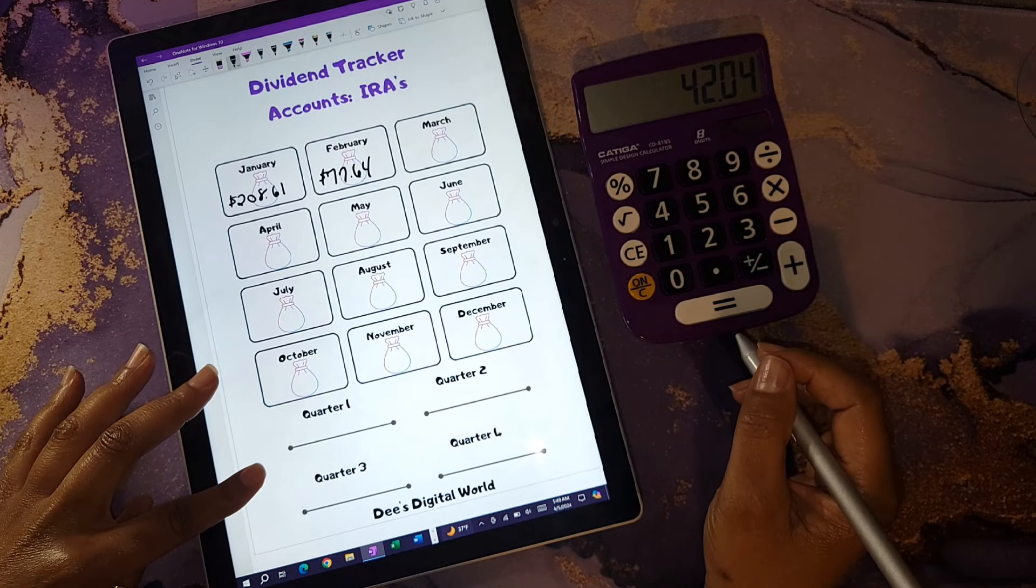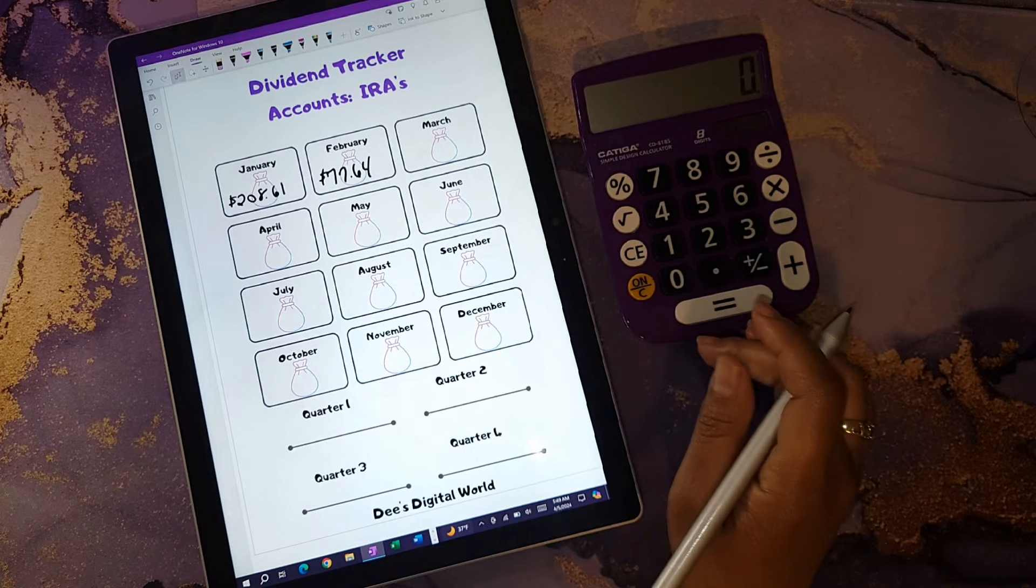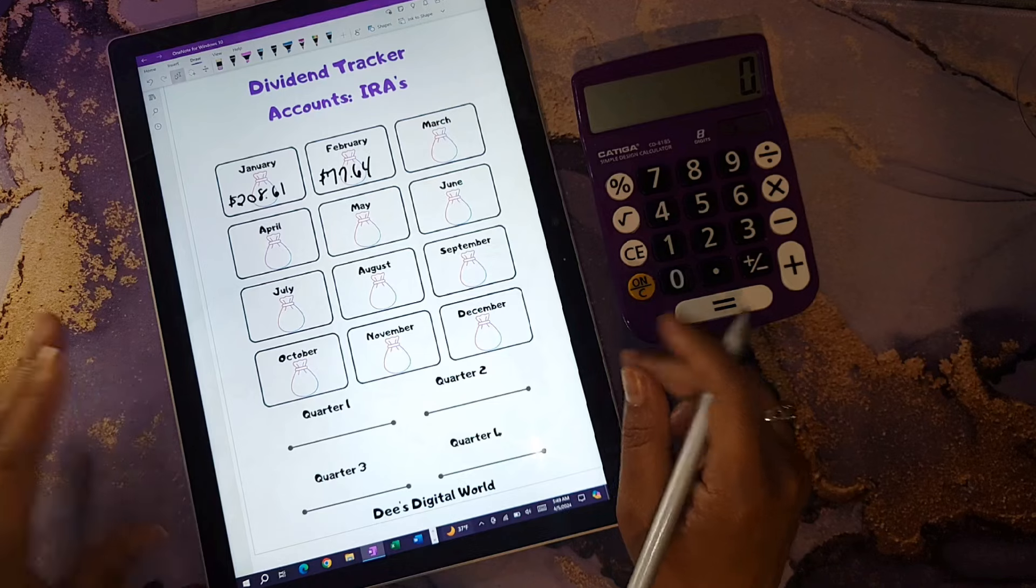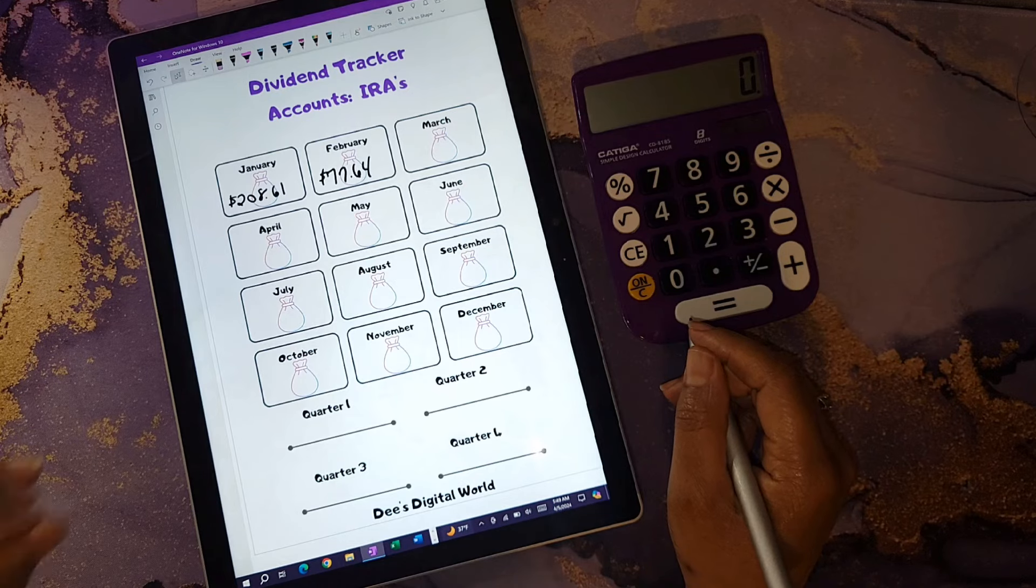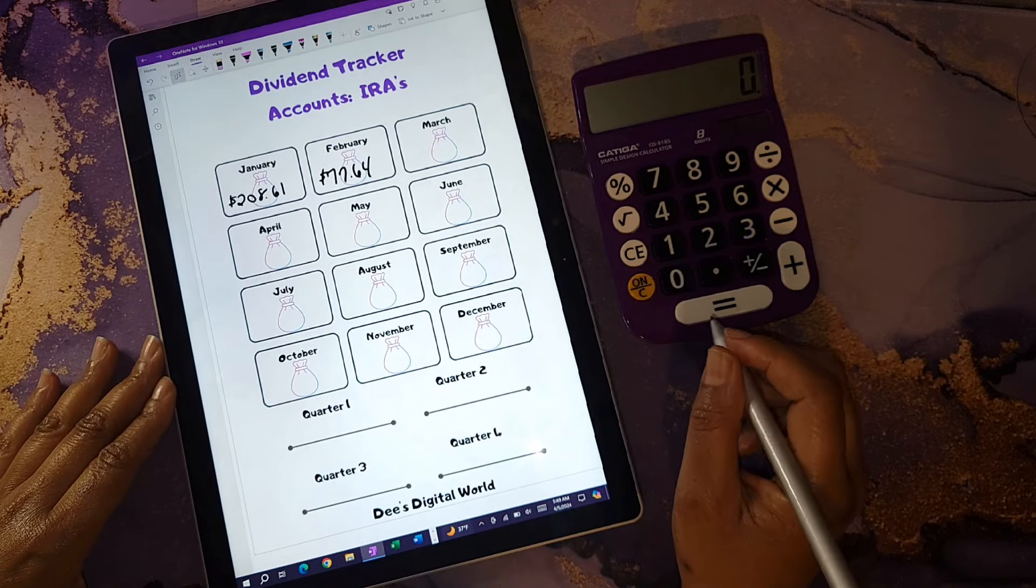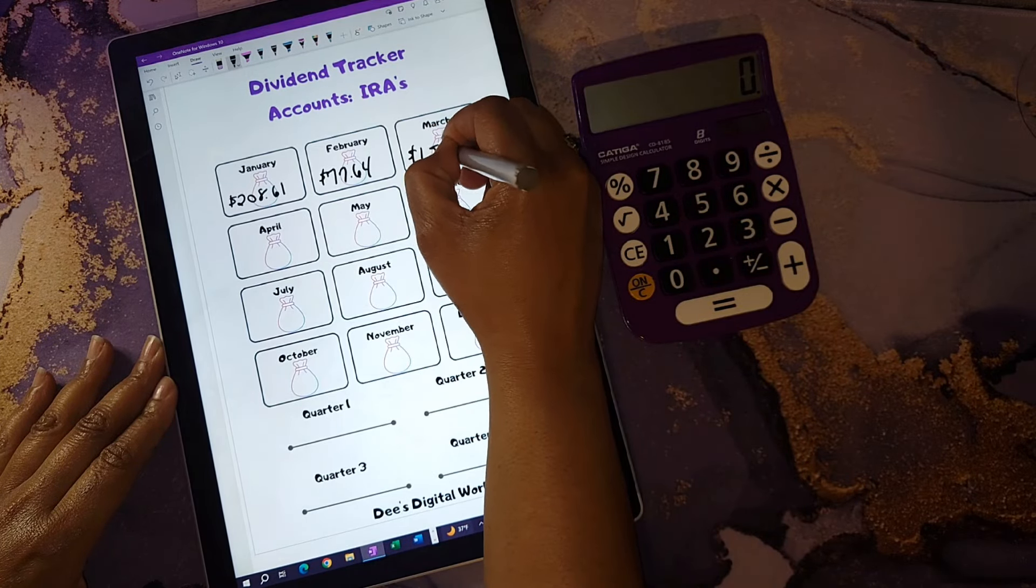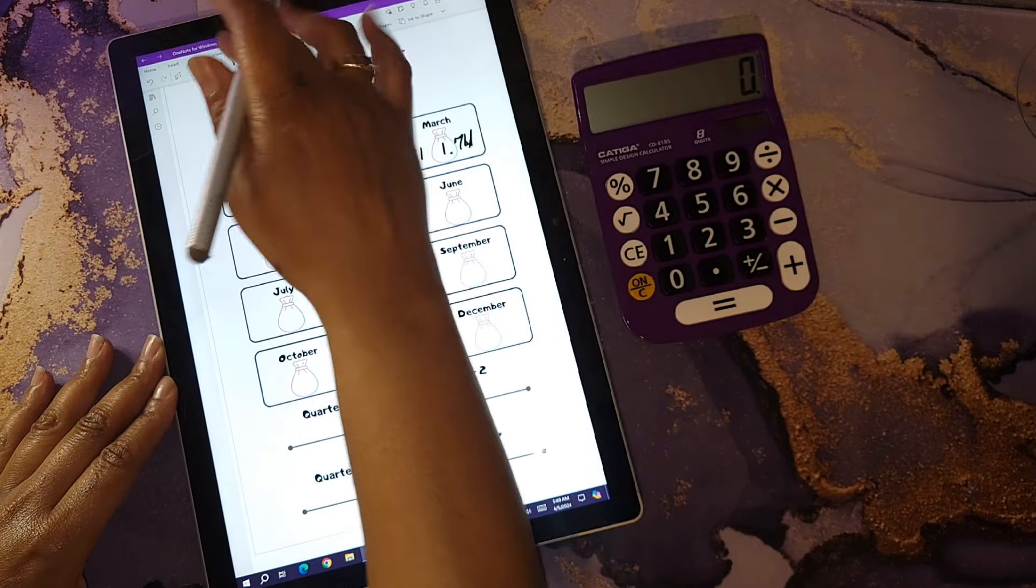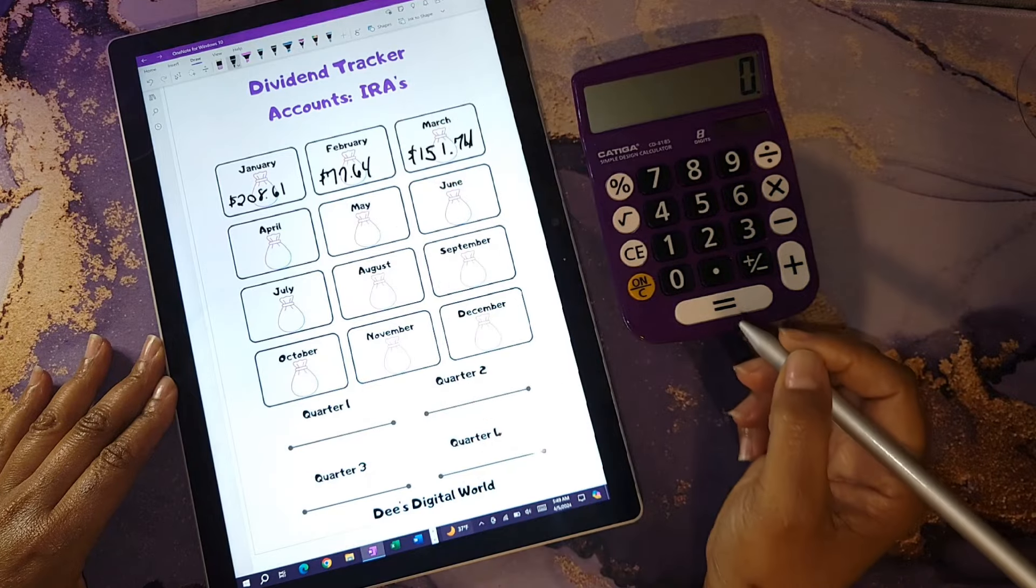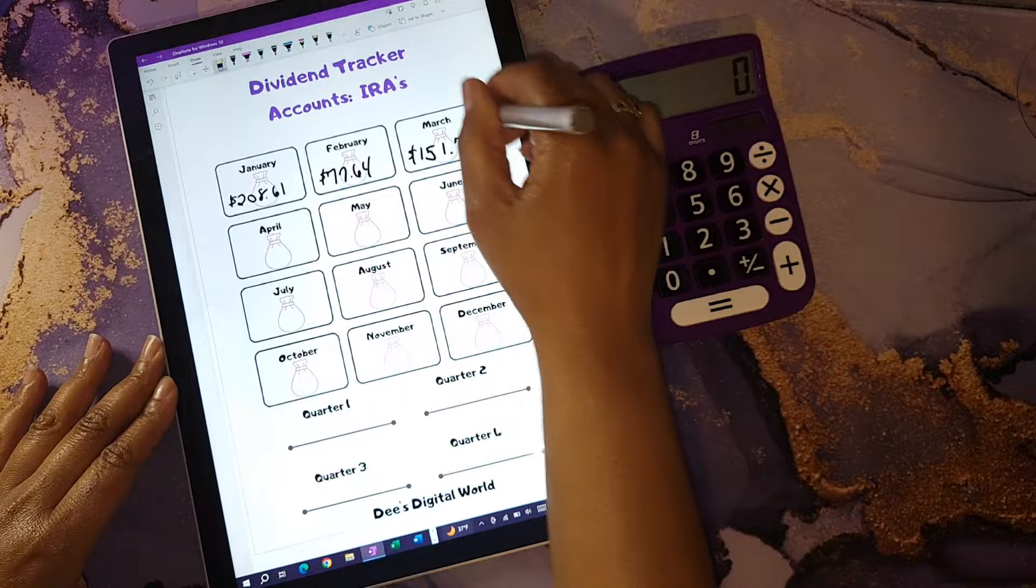Next, I would like to go over the dividends I receive in my IRAs. Now these are accounts that I can tap into after retirement, so after I reach the retirement age I can start cashing in these dividends to help pay for my expenses and what have you. For the month of March, I was able to bring in a total of $151.74. That is good to me.